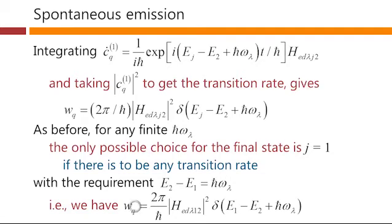So, therefore, we have this formula here where we now know for sure that the only situation that is going to give a non-zero result is if we choose the final state of the electron to be state 1.